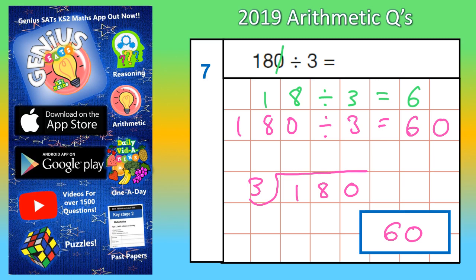3's into 1 will not go — 0 times. So because you haven't really used the 1, you carry the 1 to the next column, which makes 18. 3's into 18 goes 6 times, and 3's into 0 goes 0 times. Again, your final answer is 60.